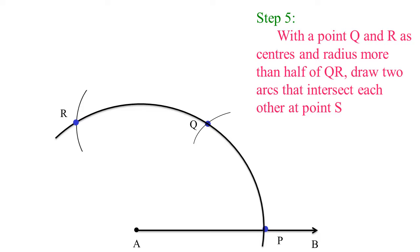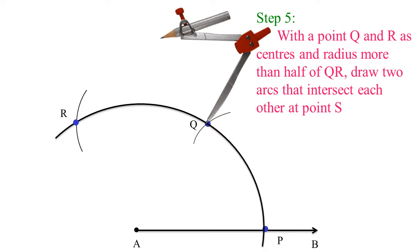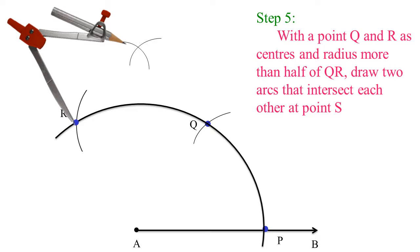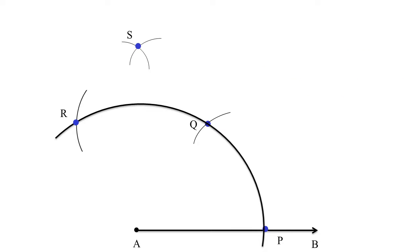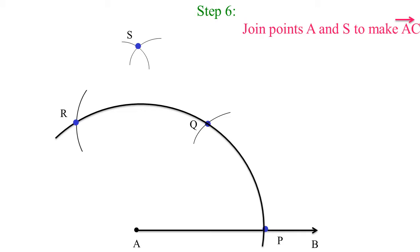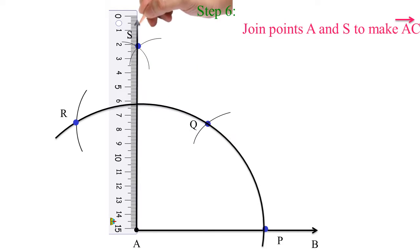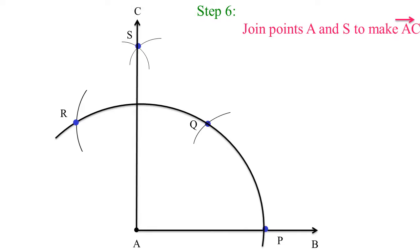Step 5: With points Q and R as the centers and take a radius more than half of QR, draw two arcs that intersect each other at a point S. First take the radius more than half of QR, with Q as the center draw the arc, next R as the center draw another arc. These two arcs intersect at point S. Step 6: Join points A and S using a ruler to make a ray AC. Let's measure the angle using a protractor. We get the angle is 90 degrees.